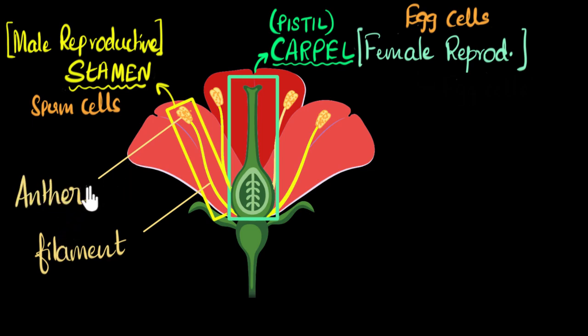And guess what? Anther produces something called the pollen grains. You may have heard of this. These dotted things that I've drawn over here that you may be able to see, they are what pollen grains are. Sometimes these pollen grains, some flowers have these pollen grains to be very sticky. In such cases, when you touch them, they will stick to your hand.